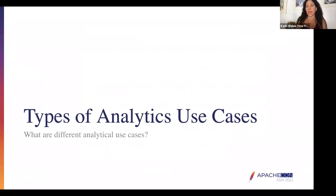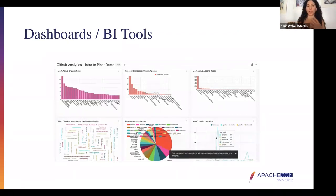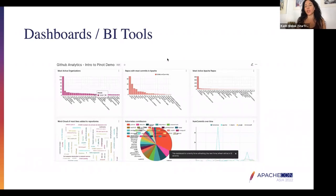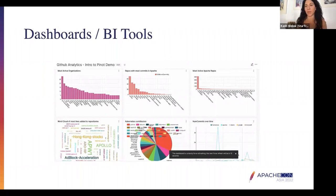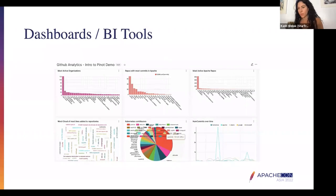Let's talk a little bit about real-time analytics to start off with. Generally speaking, there are three types of real-time analytics use cases. The first one, which is the most commonly known, is dashboards and BI tools. This is probably the most often used. It's usually used on the back end of companies — organizations that are analyzing their own internal data — and it's usually accessed by BI analysts or internal folks.